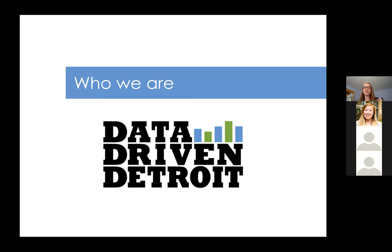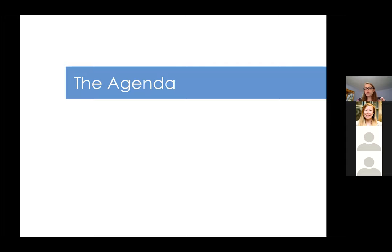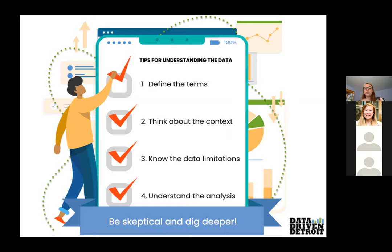Just for a quick background, Data Driven Detroit is the Metro Detroit data intermediary. We provide data to non-profits, foundations, and community members in Detroit and the Southeast Michigan region to help people make better decisions in their programming and projects. So this is right up my alley. The agenda for today is pretty simple — I've developed four tips for understanding data, so we're going to go through each of them along with some examples from coronavirus and other parts of the data world to give you some of those tools and start that critical thinking process.